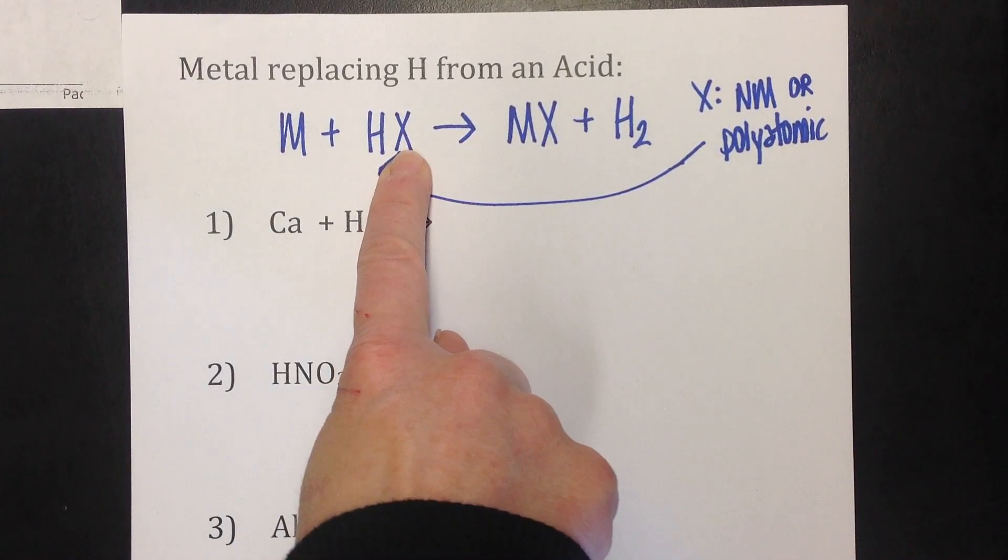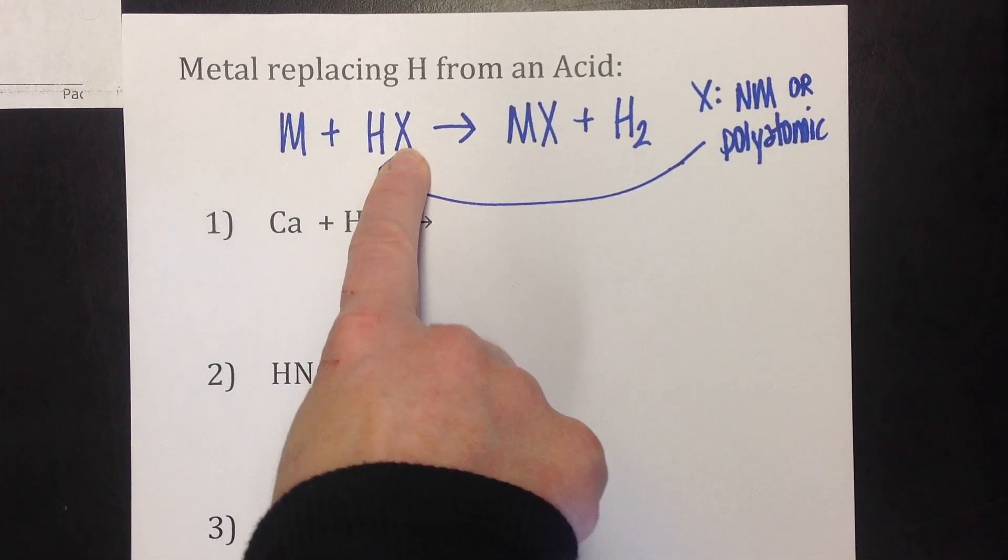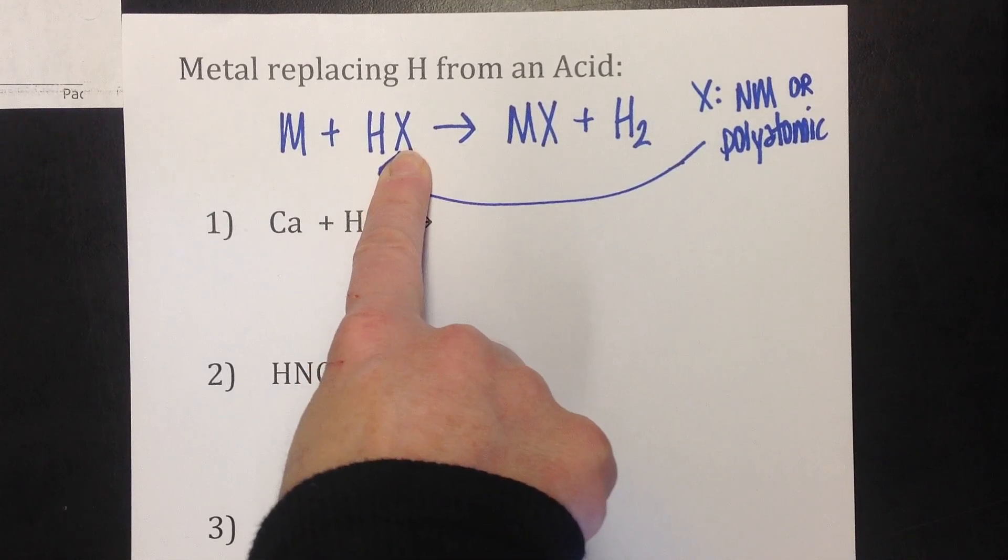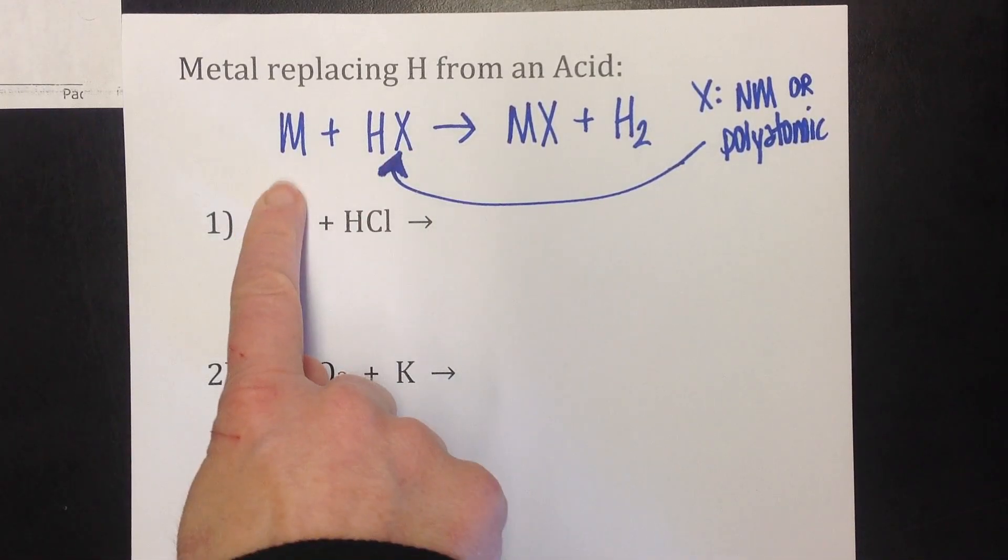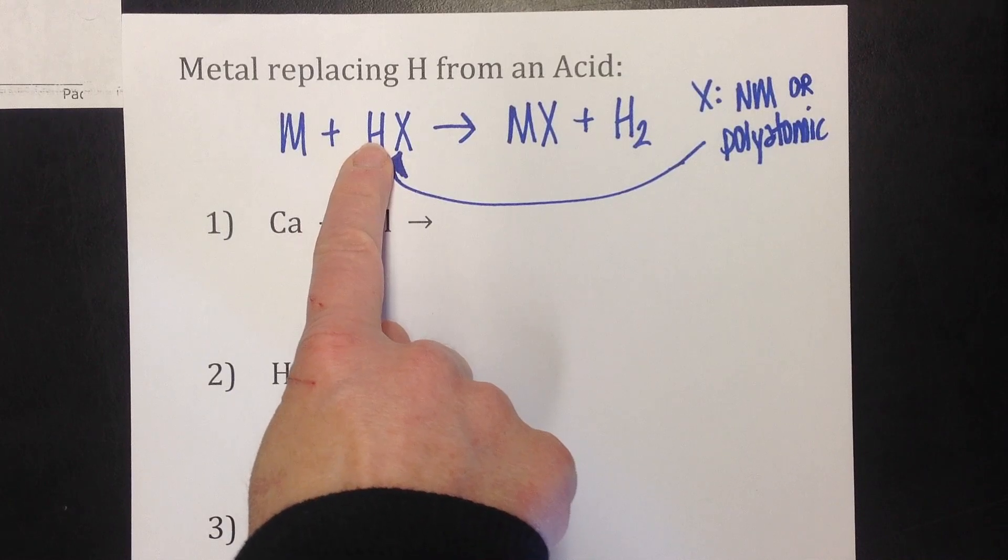So you may have something here like chlorine, fluorine, bromine, or you could have nitrate, sulfate, something to that effect. So the metal kicks hydrogen out, leaving you with hydrogen gas.